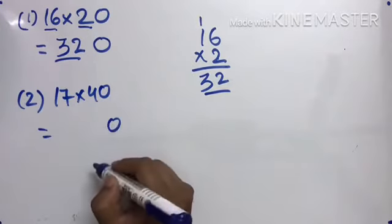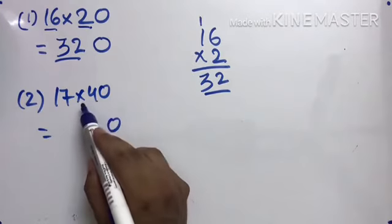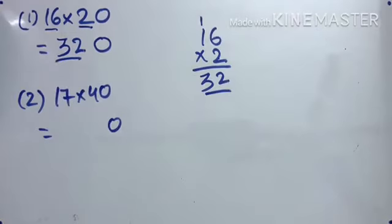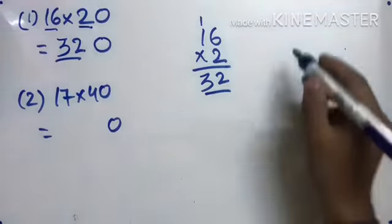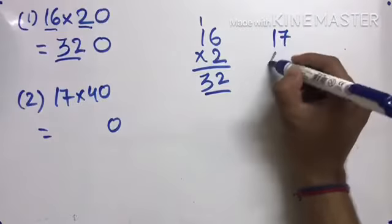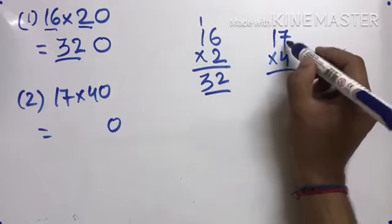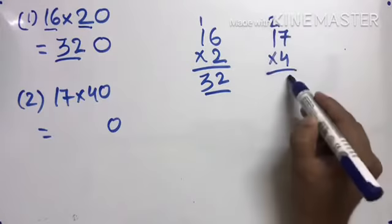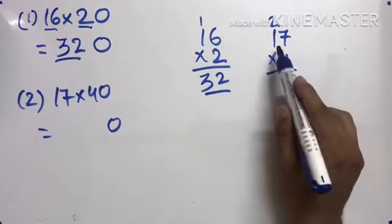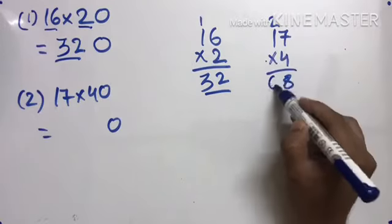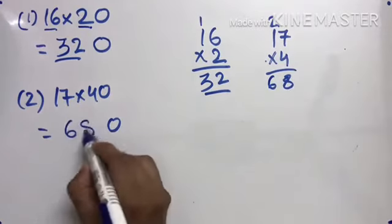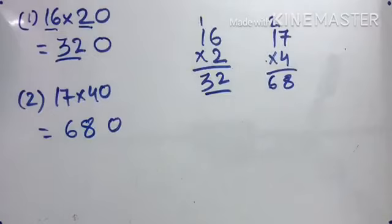Next: 17 times 40. So how many zeros? One zero. Now 17 times 4. If you remember, that's fine. Otherwise, multiply: 7 times 4 is 28, carry 2. 4 times 1 is 4 plus 2 is 6. So 680. Understood?